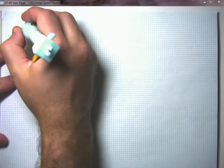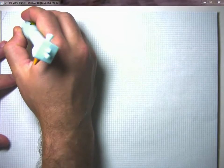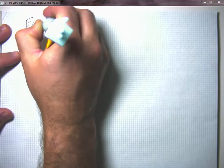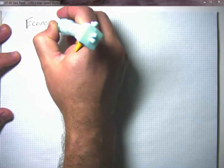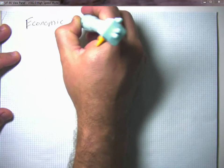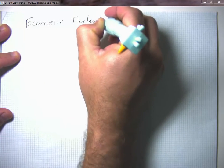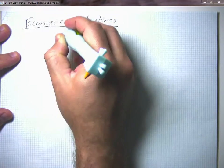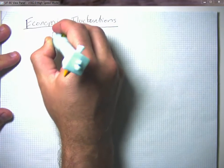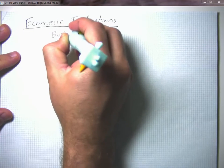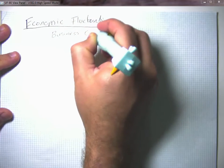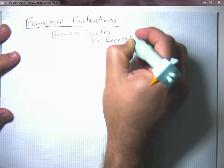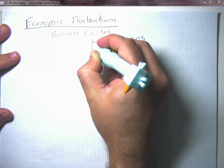In this series of video lectures, we're going to talk about what we call economic fluctuations. Economic fluctuations is the new term that economists use to talk about what they used to call business cycles, which is to say recessions and booms.